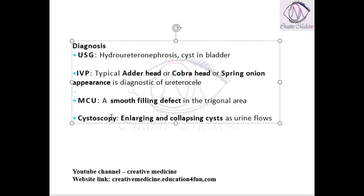On micturating cystourethrography, a smooth filling defect is seen in the trigonal area. On cystoscopy, an enlarging and collapsing ureterocele can be seen.